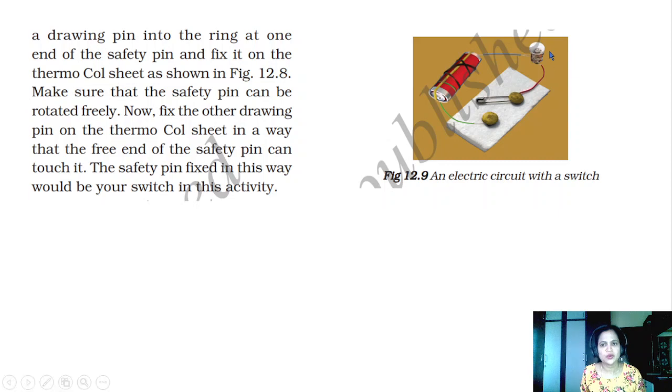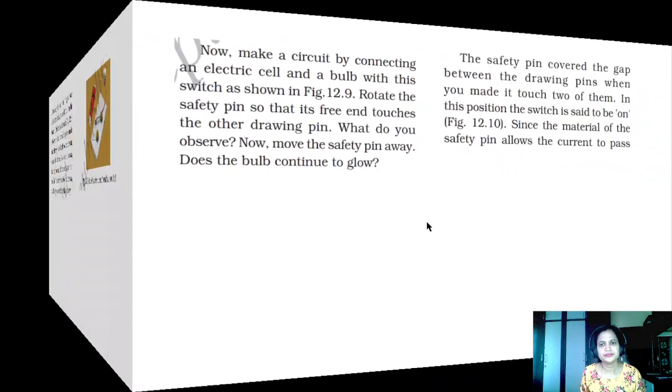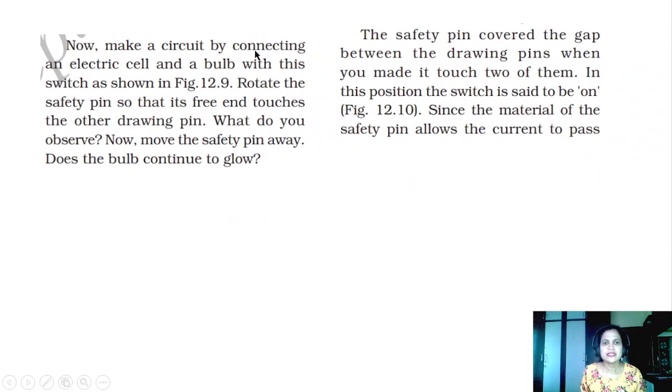Then when it is open, light will not blow. When it is closed, then light blows. Now make a circuit by connecting an electric cell and a bulb with this switch as shown in figure 12.9. Rotate the safety pin so that its free end touches the other drawing pin.